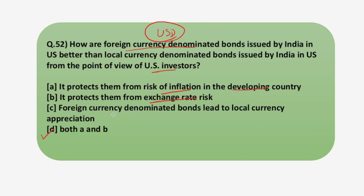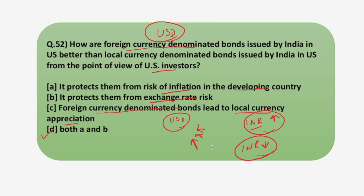Let's examine option C: foreign currency denominated bonds lead to local currency appreciation. If bonds are issued in USD, INR will actually depreciate as everyone demands USD, so this option is not correct. Our answer remains both A and B. For additional information, if a non-US company — in this case an Indian company — issues USD-denominated bonds in the US, those are known as Yankee bonds, a kind of foreign bond. If you have any doubt about appreciation, depreciation, or exchange rate risk, do ask.